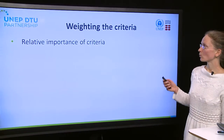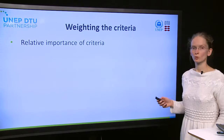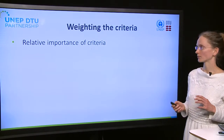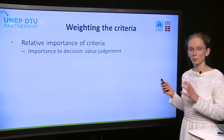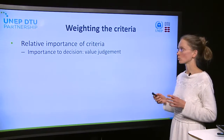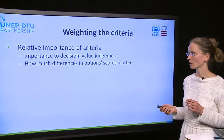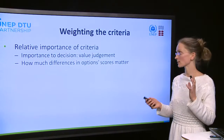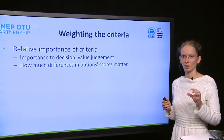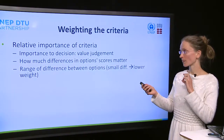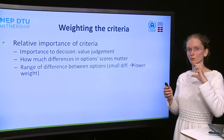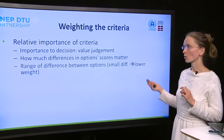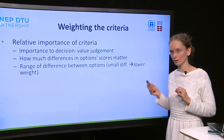The essence of the weighting of the criteria is to determine what the relative importance of the criteria are — and by importance we mean importance to the decision, to the goals. Another way of looking at this is to ask how much differences in option scores matter. If the range of difference between the scores is low, it is probably worth putting a lower weight on that criterion.